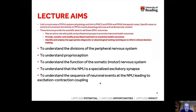I'm just going to pause here to update you on the lecture aims associated with lecture three. Those are: to understand the divisions of the peripheral nervous system — we're going to have screencasts on the autonomic nervous system and some on the somatic nervous system. I'll explain proprioception, and after the autonomic nervous system we'll talk about the neuromuscular junction, the NMJ, as a specialized excitatory synapse.